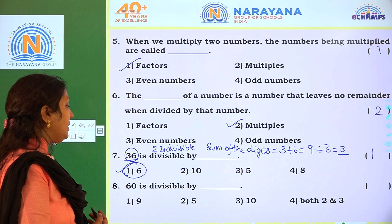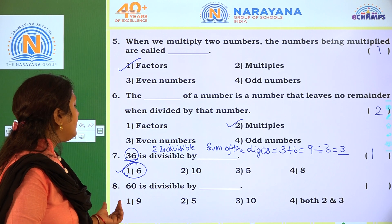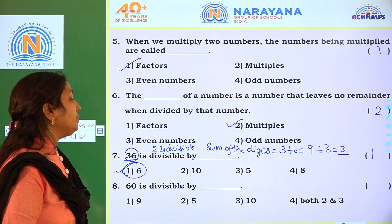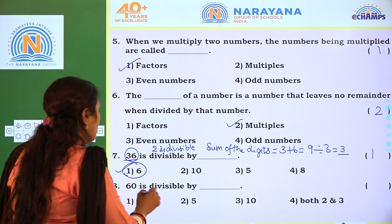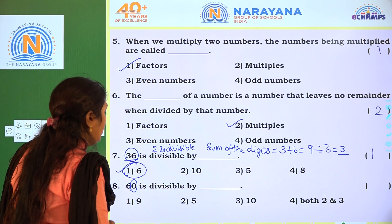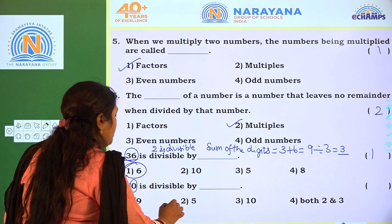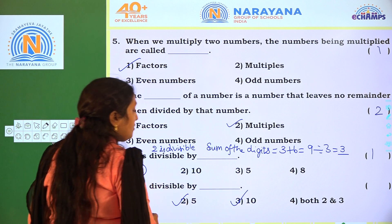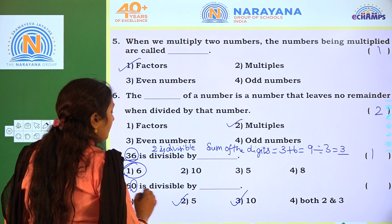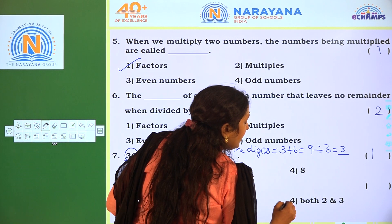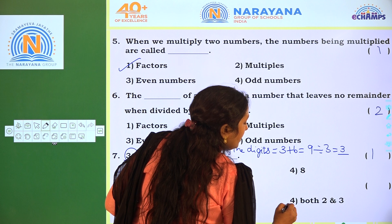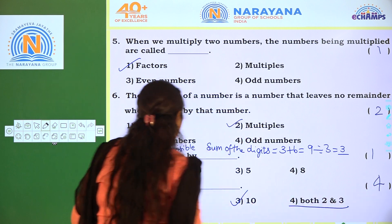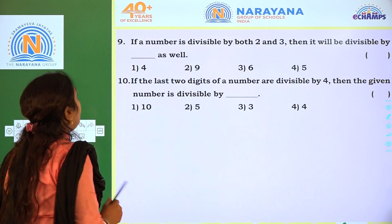Next one: 60. Is 60 divisible by 9, 5, 10, or both 2 and 3? What is in the units place? 0. So 5 is divisible and also 10 is divisible. That means both 2 and 3 are also divisible. So the required option is 4.